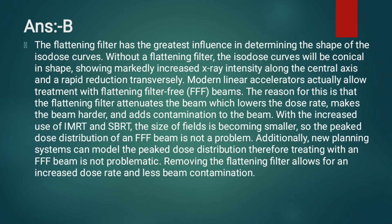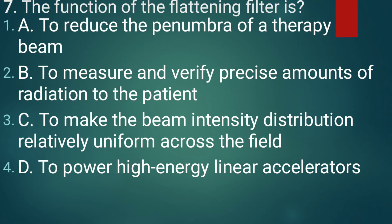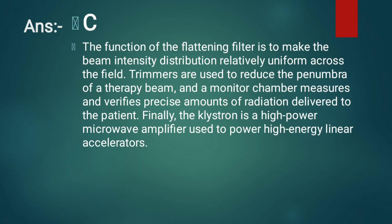Removing the flattening filter allows for an increased dose rate and less beam contamination. Question 7: The function of a flattening filter is? The correct answer is option C: to make the beam intensity distribution relatively uniform across the field. Trimmers are used to reduce the penumbra of the therapy beam, and a monitor chamber measures and verifies the amount of radiation delivered to the patient. The klystron is a high-power microwave amplifier used to power high-energy linear accelerators.